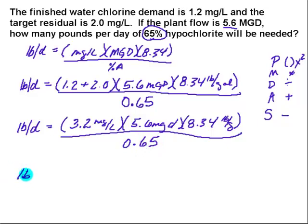So I've got my pounds per day, and everything above the line gets multiplied. So I'm going to put that in the calculator: 3.2 times my 5.6 times 8.34.